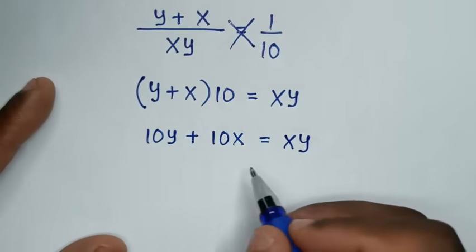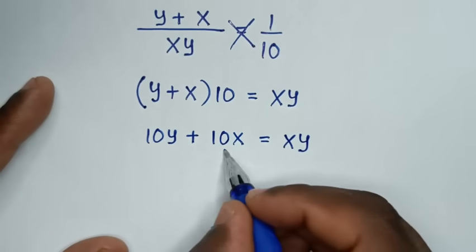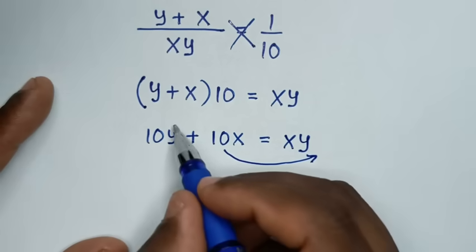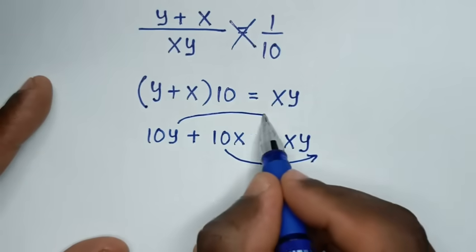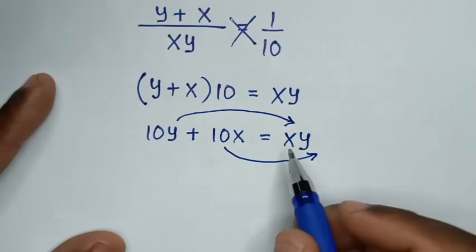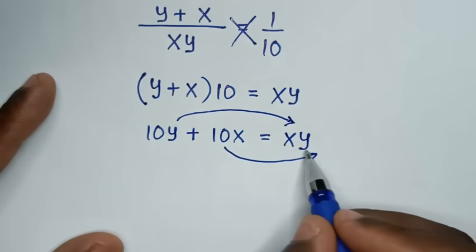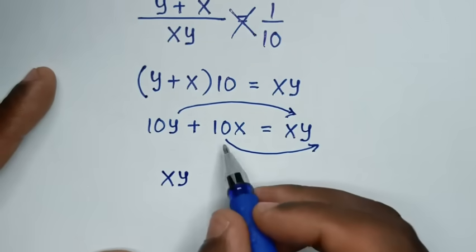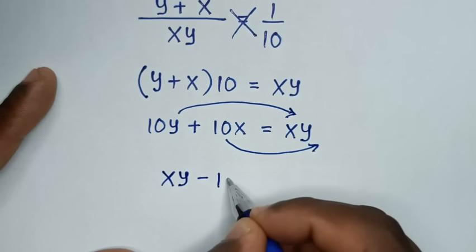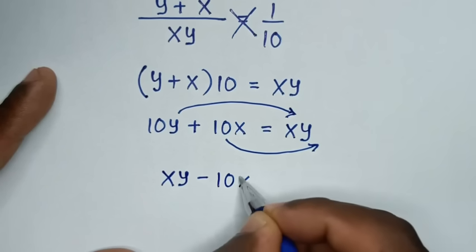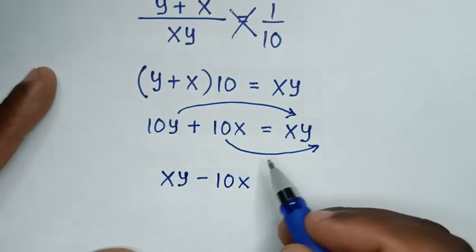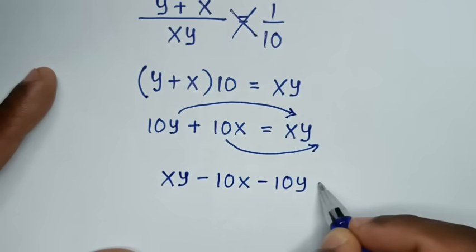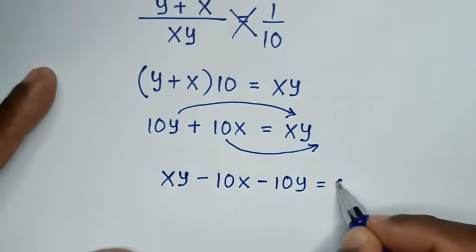In the next step, we take 10x and 10y to the right side. So we have xy minus 10x minus 10y is equal to 0.